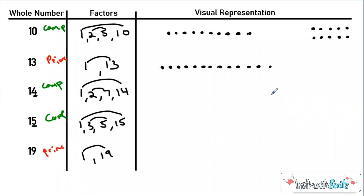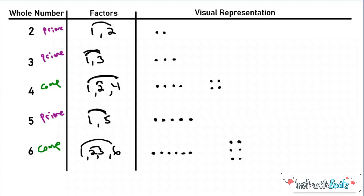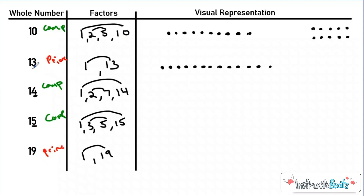One thing I want to point out is that sometimes when we start to learn these, we tend to think that only odd numbers are prime and even numbers are composite. While it's true that most even numbers are composite, 2 is an even number and it's actually prime. All the other even numbers are going to be composite. And another misconception is that all odd numbers are prime — but if we take a look at 15, it's an odd number and it's composite. So we can't just think about even and odd all the time; we have to actually do some thinking.